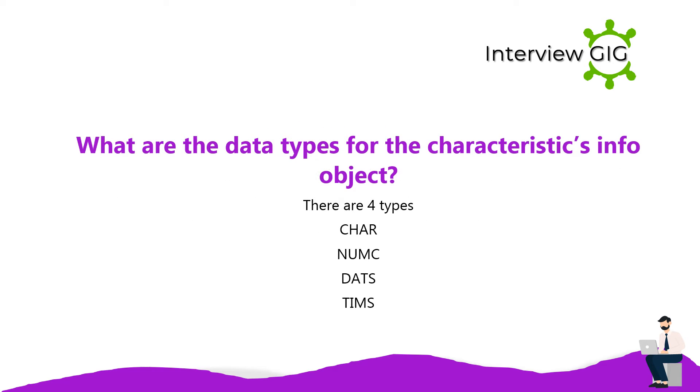What are the data types for the characteristics in an InfoObject? There are 4 types: CHAR, NUMC, DATS, and TIMS.